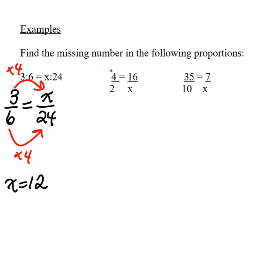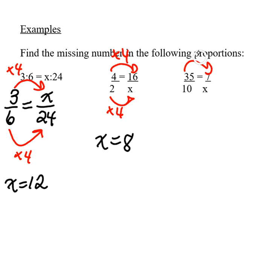Likewise, you're going to see here that 4 times 4 gives you 16, so 2 times 4 will give you 8. This one's a little bit different — you're actually going to be dividing by 5, and remember whatever you do to the bottom you do to the top, so x is going to be 2.